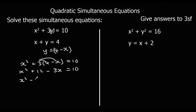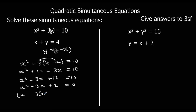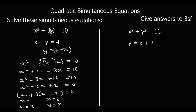Rearranging to x squared minus 3x plus 2 equals 0. Factorizing: the factors of 2 are only 1 and 2, and minus 1 minus 2 gives minus 3, so x equals 1 or x equals 2. Then using y equals 4 minus x: when x equals 1, y equals 3; and when x equals 2, y equals 2.